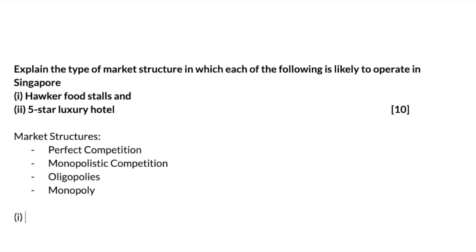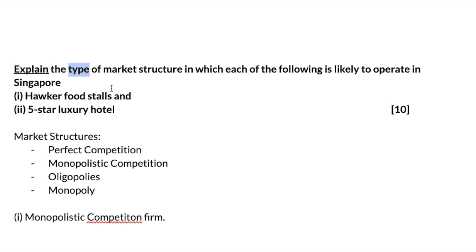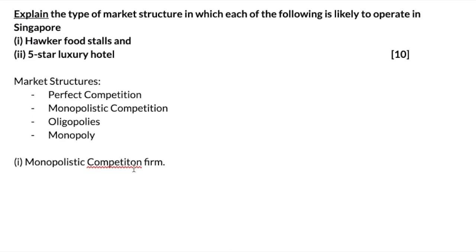So firstly, you know that perfect competition in reality doesn't really happen. Oligopolies, monopoly, and MC firms are more likely to happen. For hawker food stalls, they are actually likely to be a monopolistic competition firm. The reason for this is where we have to start breaking it down, because the answer is asking you to explain the type of market structure — basically explaining what a monopolistic competition firm is and why a hawker food stall is related to it.